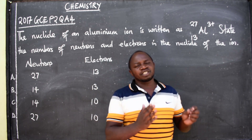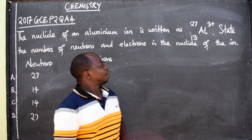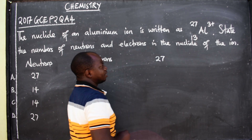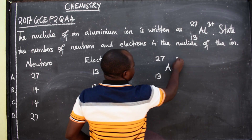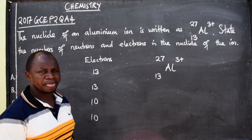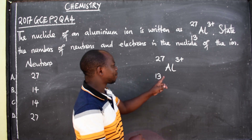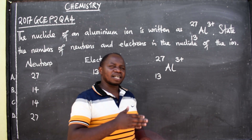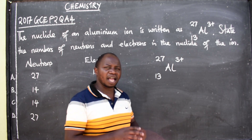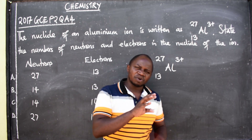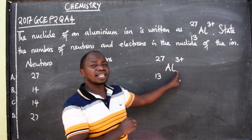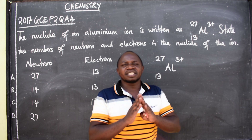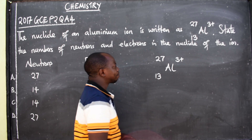This question comes from the topic called atomic structure and the periodic table. To understand it, you need to know what is happening with the nuclide notation. The symbol for aluminium is Al, found under group 3 on the periodic table. For elements with two-letter symbols, the first letter is always capital and the second is lowercase. For single-letter symbols, that letter is always capital.